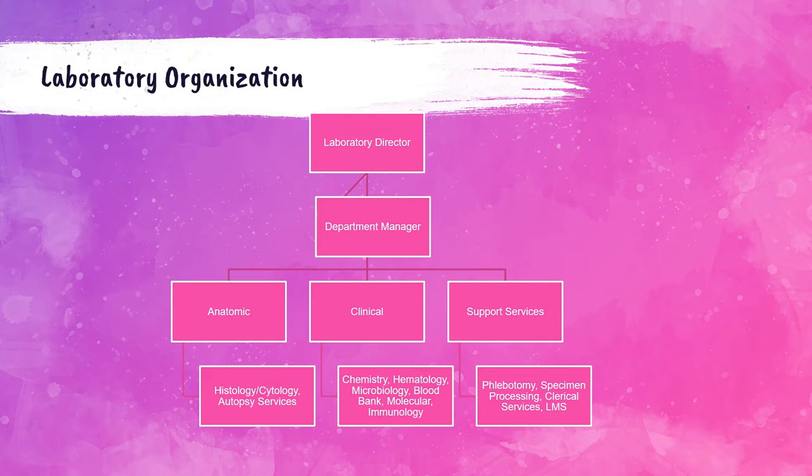To get started, let's look at the breakdown of the organization of a laboratory. At the top is the laboratory director, who is in charge of all of the laboratory personnel — these are generally pathologists. Under that director is the department manager or managers, depending on the size of the laboratory.